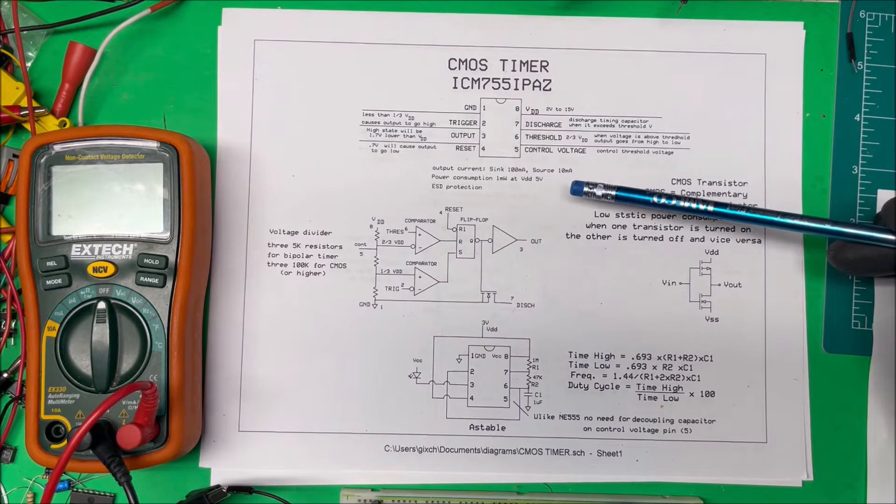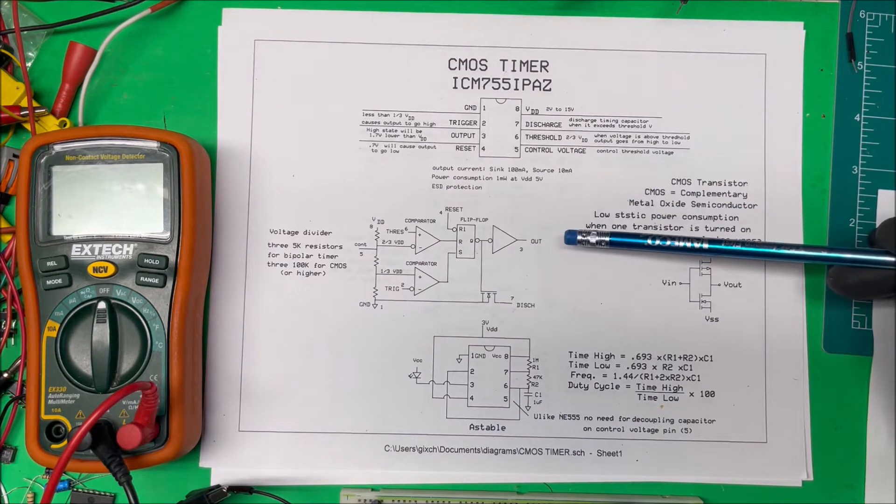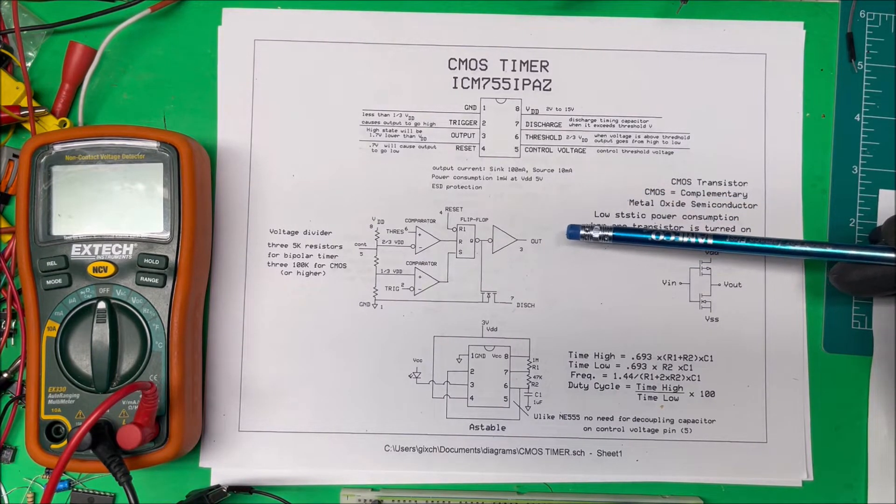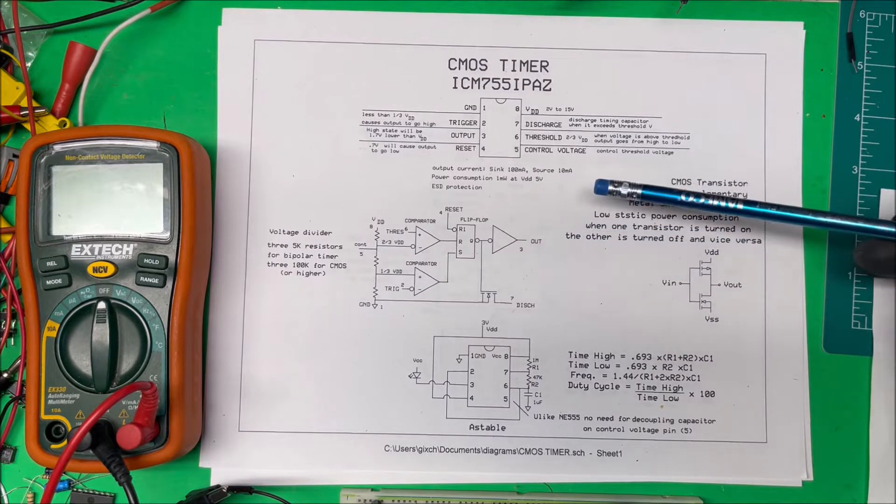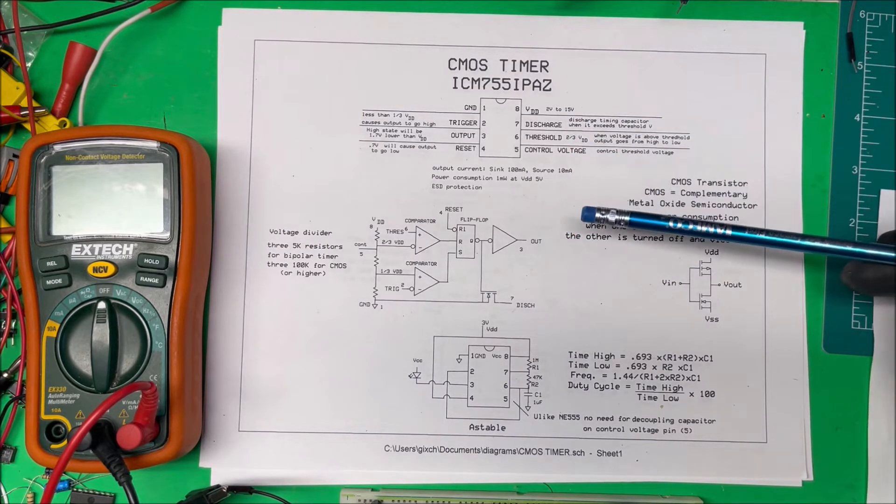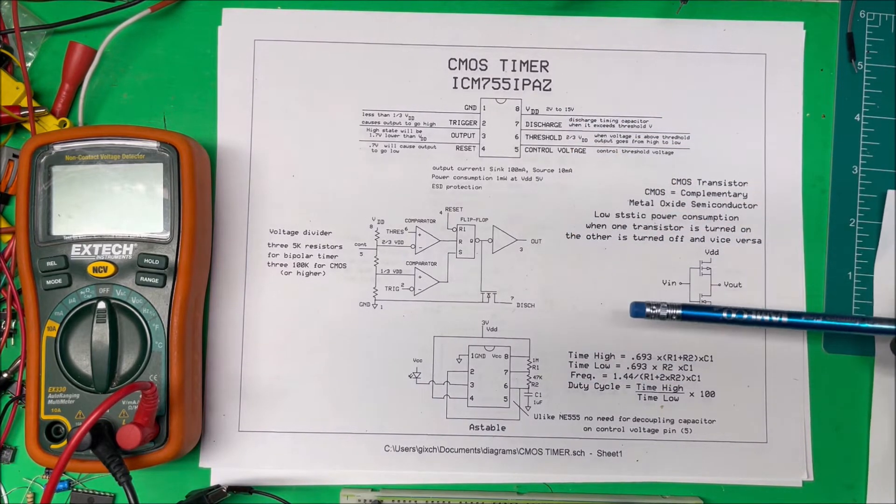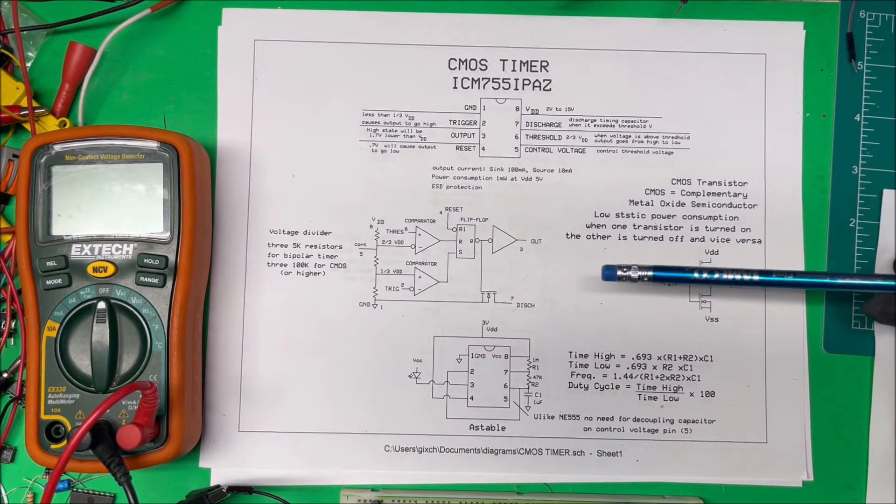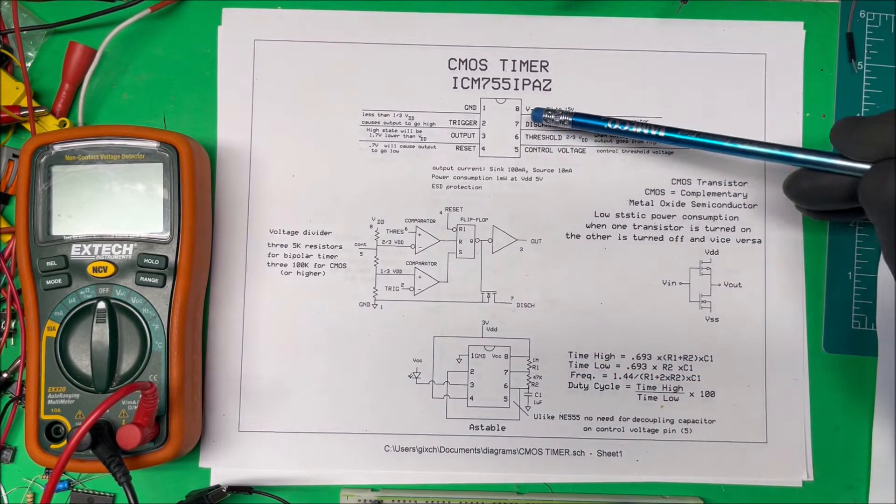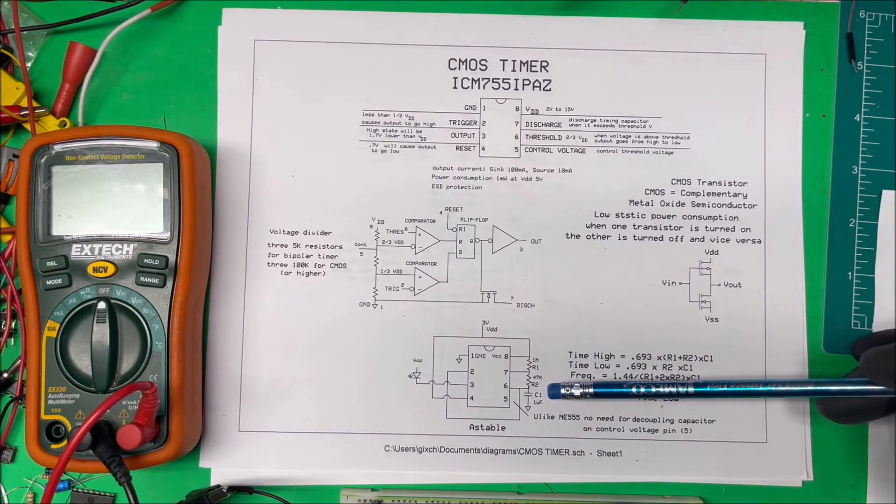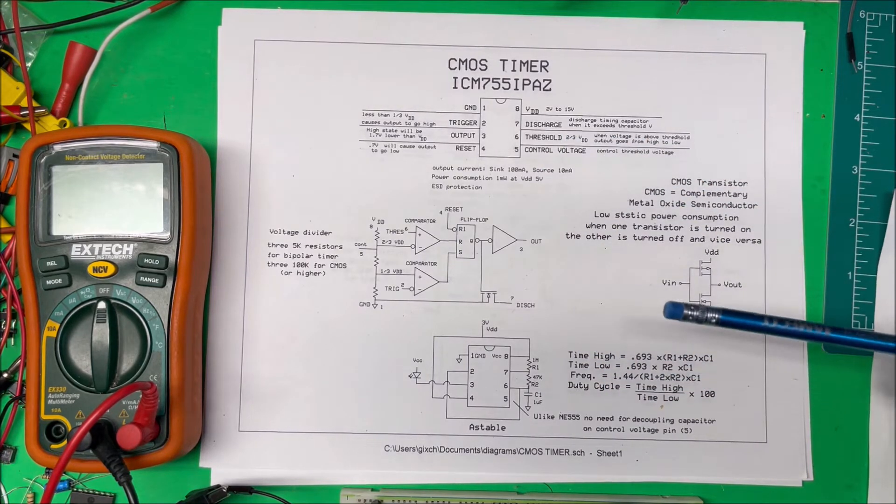The standard 555 are so cheap now that they're six cents a piece or so. So they can buy a bunch of those up, rebadge them and sell them as these CMOS timers. And they actually work in the circuit. They're an actual timer that works, but they have more power consumption. So it's just too easy for them to make fake ones.